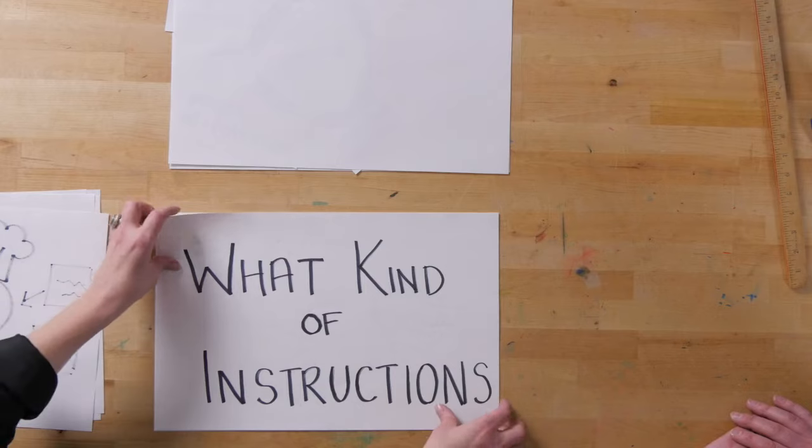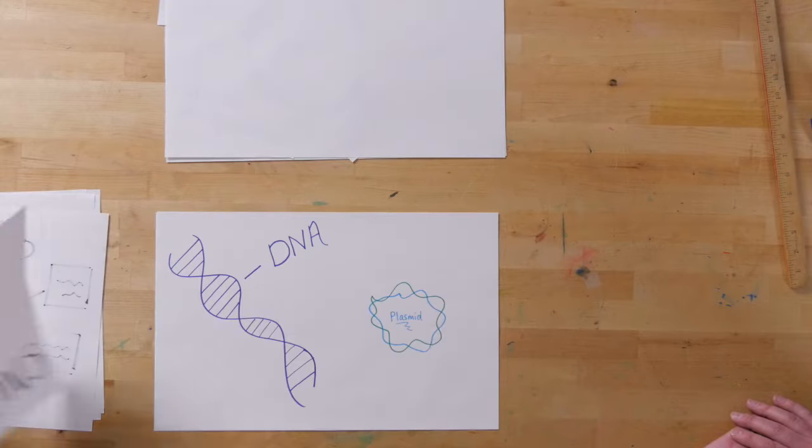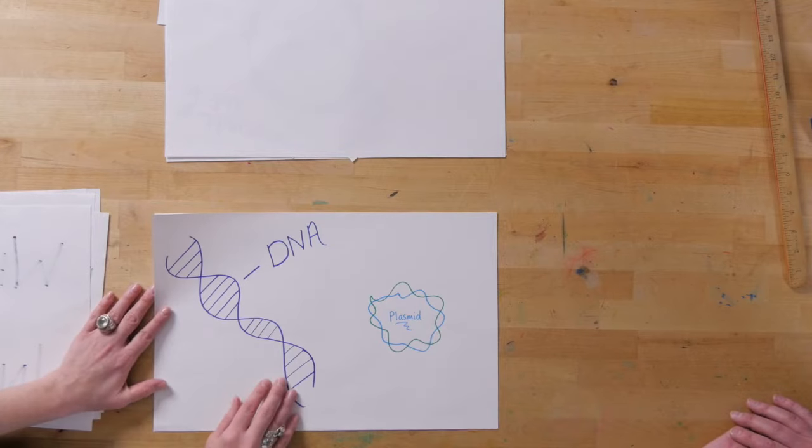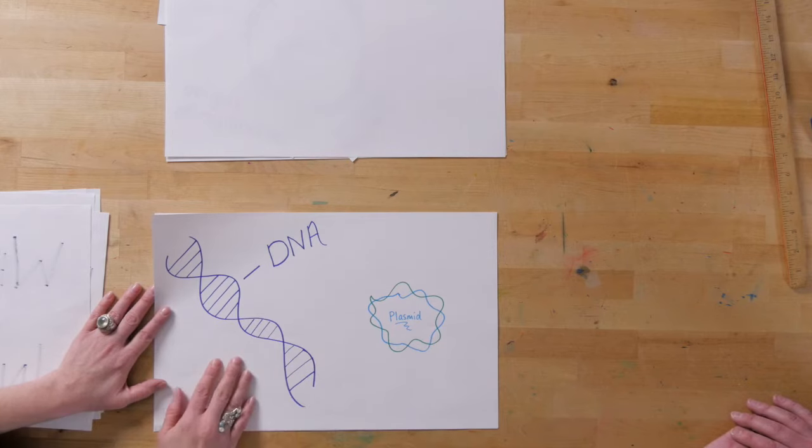What kind of instructions are there? The instructions are housed in molecules called DNA or deoxyribonucleic acid. DNA exists as a double helix and it's double-stranded. However, in bacteria, DNA actually exists as a circular chromosome and in a lot of cases, plasmids.